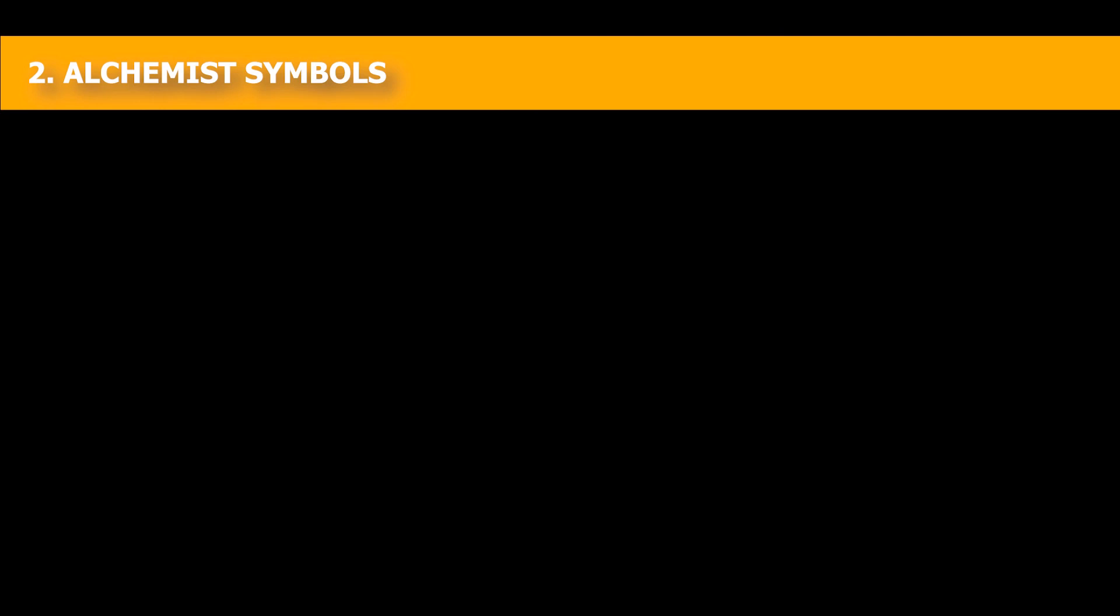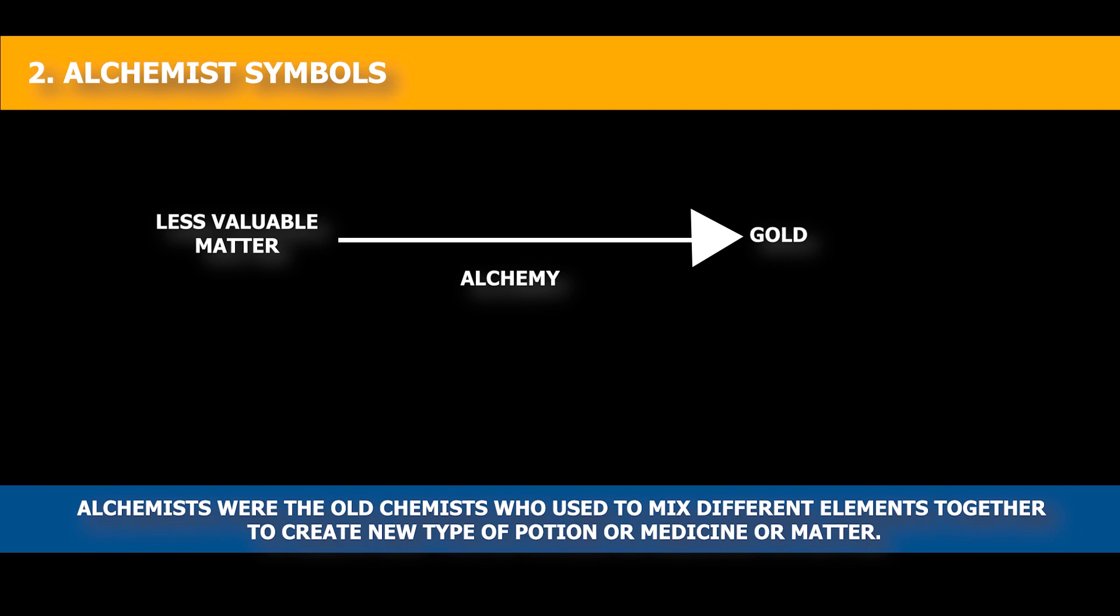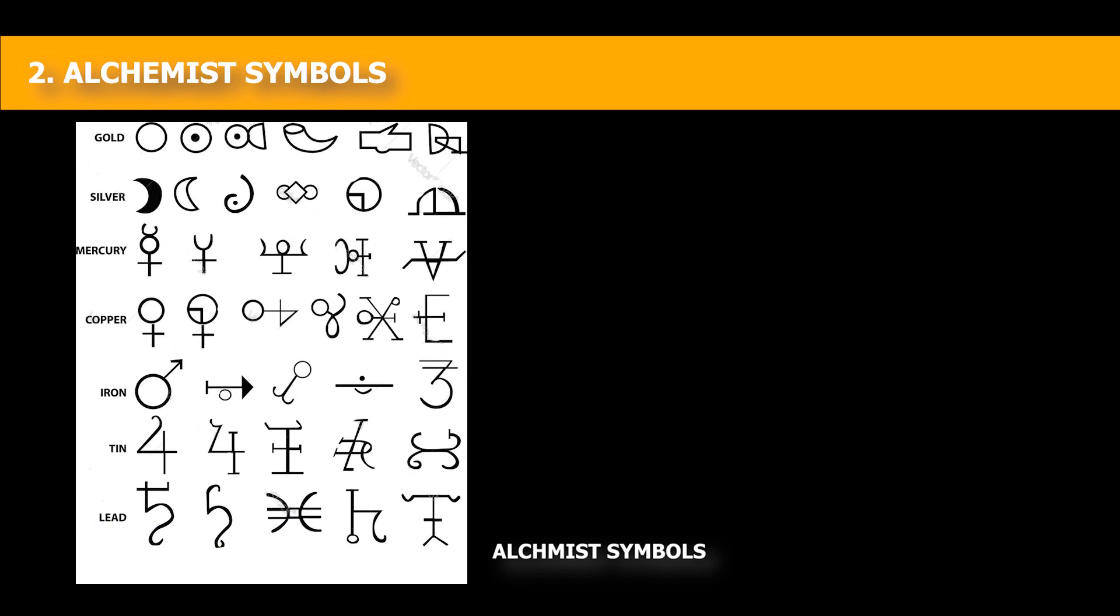2. Alchemist Symbols. Alchemists were the people who used different methods to transform a less valuable matter into gold. This process is known as alchemy. They were the old chemists who used to mix different elements together to create new type of potion, or medicine, or matter. These people also used various shapes as symbols to represent elements.